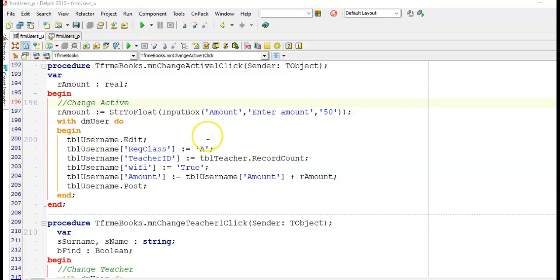It would also be possible to have TBL teacher dot last and then assign that teacher ID field to the user name's teacher ID field. This here is our foreign key so we have to make sure that it's getting a value from an existing field or value in the table TBL teacher.